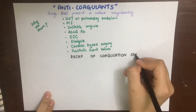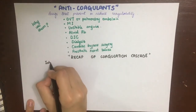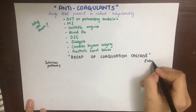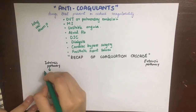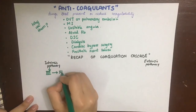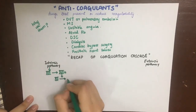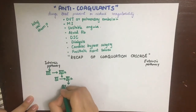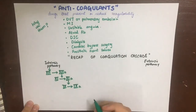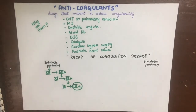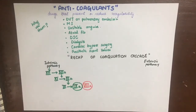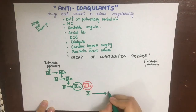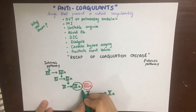Now a brief recap of the coagulation cascade before we see the drugs that act on it. We have the intrinsic pathway and the extrinsic pathway. The intrinsic pathway was activated by any negative charge surface. It basically acts on factor 12 and converts it into factor 12a, which in turn converts 11 into 11a, which will convert 9 into 9a. Factor 9a along with factor 8a will act on factor 10 to convert it into the active form, that is 10a.